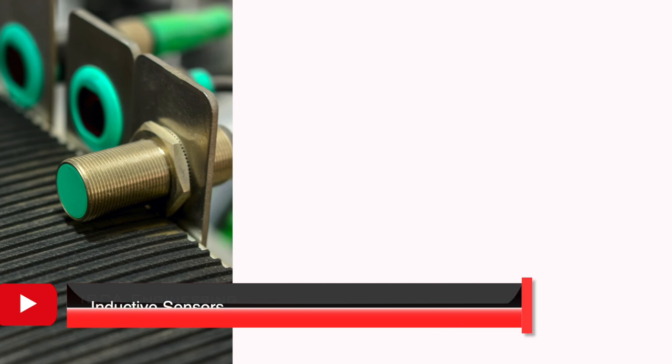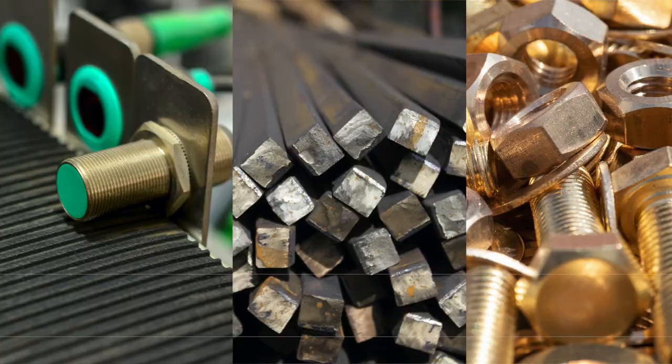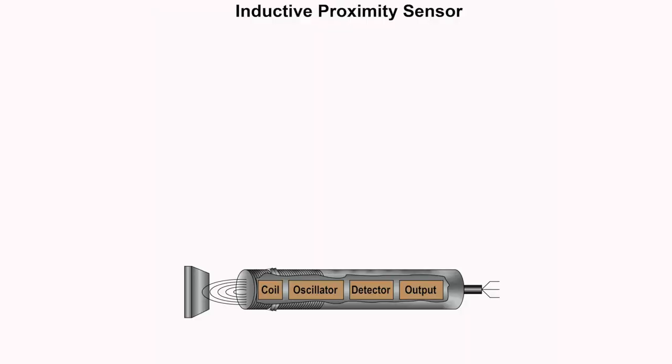Inductive proximity sensors are capable of detecting both ferrous metals and non-ferrous metals. The way these sensors operate is by detecting magnetic loss due to eddy currents that are generated on a conductive surface by an external magnetic field.